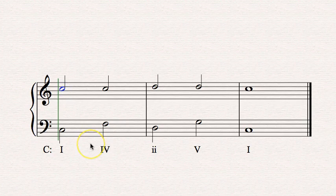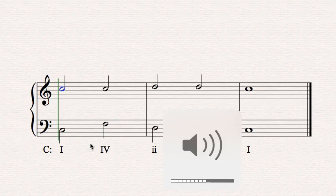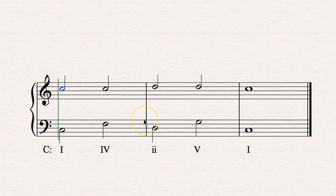We already have a soprano line and we're going to add an alto line here. The one chord in C major, we've already doubled the root. And I'm going to go ahead and choose the pitch closest to the soprano line that fits in this chord.